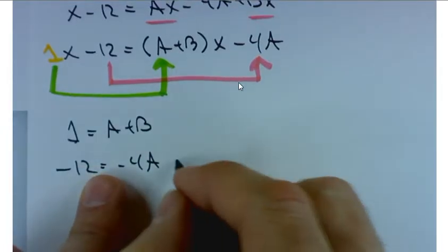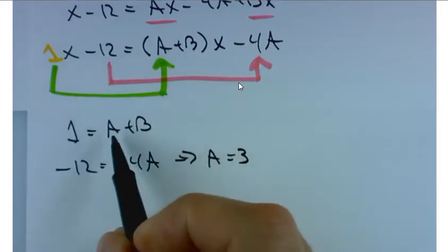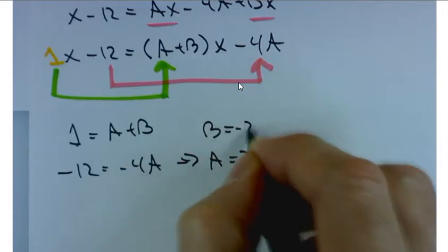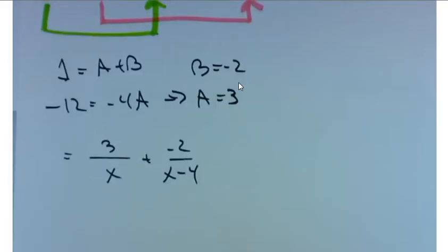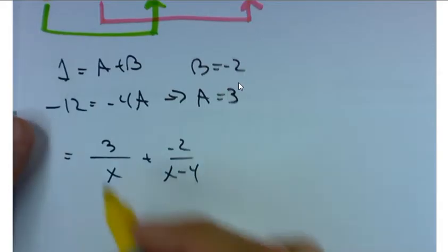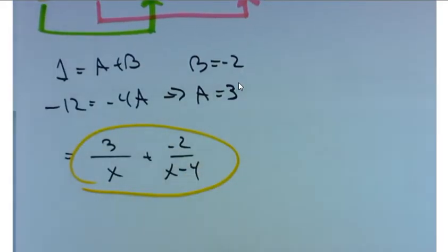So what does A equal? And if A equals 3, then B equals negative 2, just by substituting. So your final answer would be 3 over x plus negative 2 over x minus 4, or you could just write minus 2 over x minus 4. Either one is fine. But for your final answer, please go back and plug it in and show me the final partial fraction decomposition.